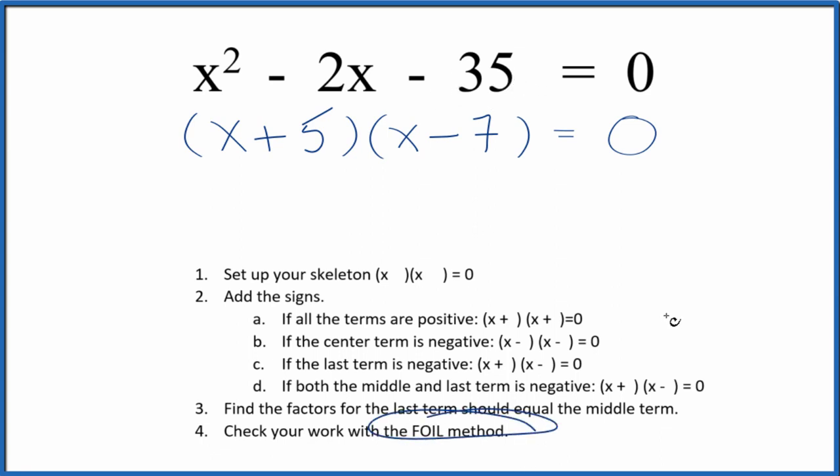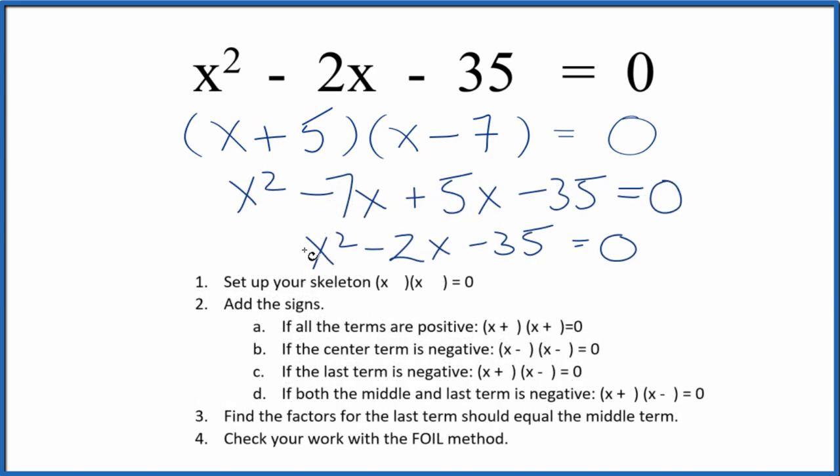But you should always check your work with the FOIL method. We'll take the first terms, that gives us x squared, the outside terms, x times negative 7, inside, 5 times x, and then the last term, 5 times negative 7 is negative 35. That all equals zero. We can combine these terms right here, and that gives us the same thing we started with. So we correctly factored the equation x squared minus 2x minus 35.